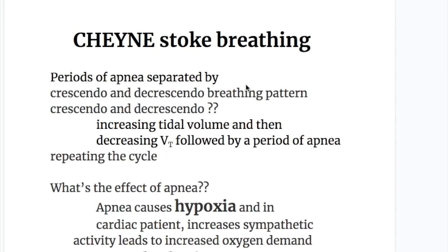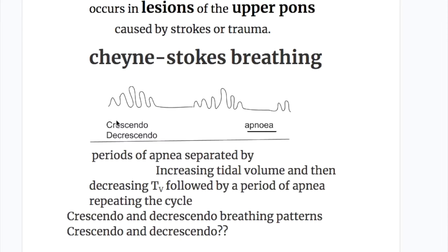In Cheyne-Stokes Breathing, there are periods of apnea separated by a crescendo and decrescendo breathing pattern. In crescendo and decrescendo pattern, there is increasing tidal volume and then a decreasing tidal volume, followed by a period of apnea, repeating the cycle. Here is the Cheyne-Stokes Breathing pattern: crescendo — increasing tidal volume — and then decrescendo — decreasing tidal volume — followed by a period of apnea, and then the cycle repeats.